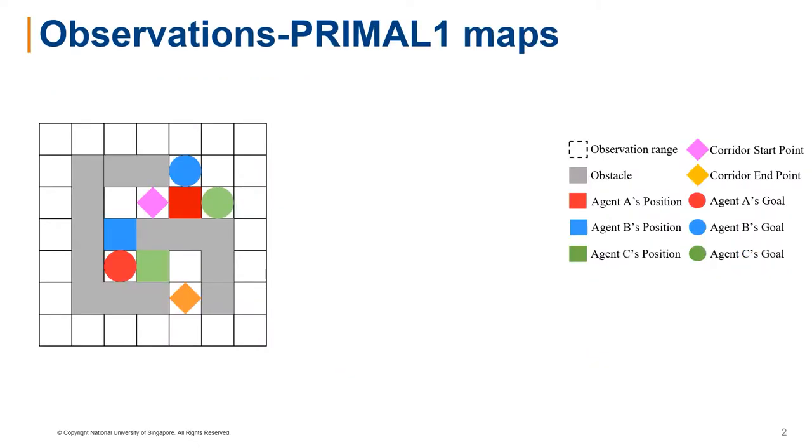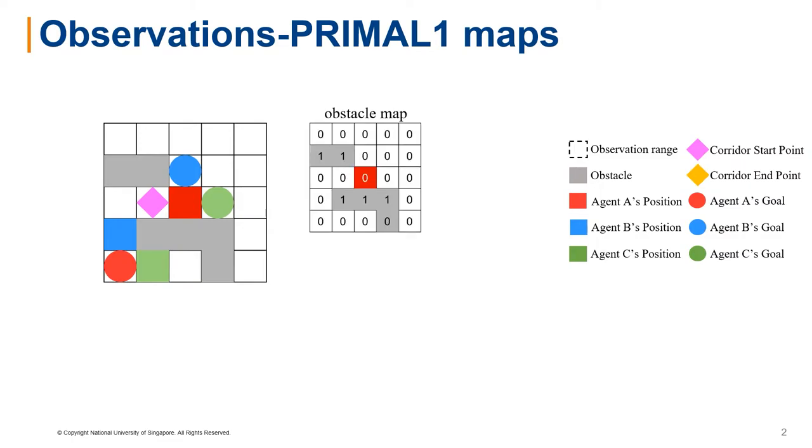Let's take the three-agent case as an example. If this is the state we see, the observation size is 5. For agent A, the first four layers of maps are as follows.